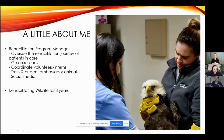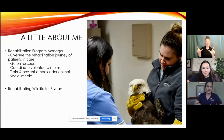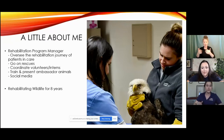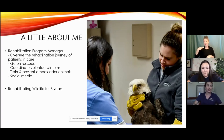My official title is Rehabilitation Program Manager, but I am a licensed rehabilitator for the state of Virginia. My job is to oversee the rehab journey of all patients — from when they come in, getting raised or treated for injuries, all the way through release: figuring out where and when to release them. I also go out on rescues, coordinate volunteers and interns, do training, and help train our ambassador animals that are non-releasable.